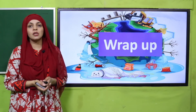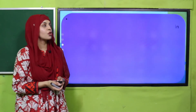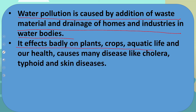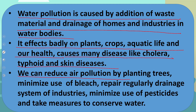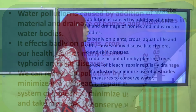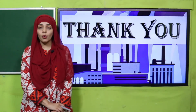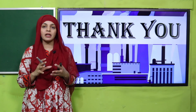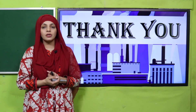My dear students, let's move forward towards the wrap-up. The important points from today's lecture: water pollution is caused by addition of waste material and drainage of homes and industries into water bodies; it affects plants, crops, aquatic life and our health badly; it causes many diseases like cholera, typhoid and skin diseases; we can reduce water pollution by planting trees, minimizing use of bleach, repairing drainage systems of industries, minimizing use of pesticides, and taking measures to conserve water. Take care of the water because it is very basic to the existence of life. Keep everybody around you safe. Have a good day, thank you so much and Allah Hafiz.